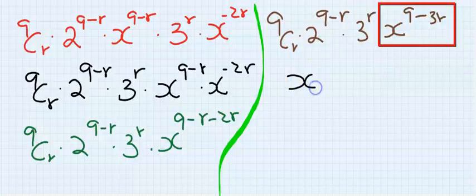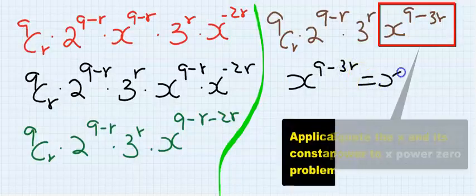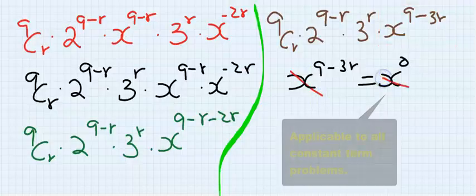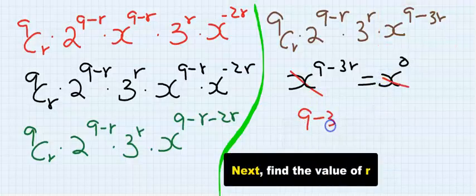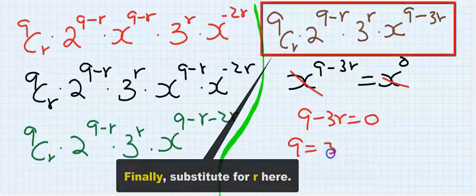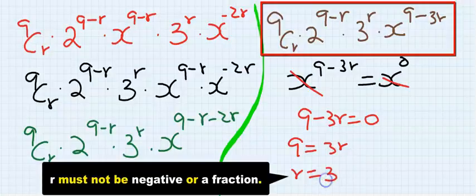The next step is, at constant term, x to the power of 9 minus 3r is equal to x to the power of 0. This and this cancels out, and I have 9 minus 3r equals 0. 9 equals 3r, and you see that r equals 3.